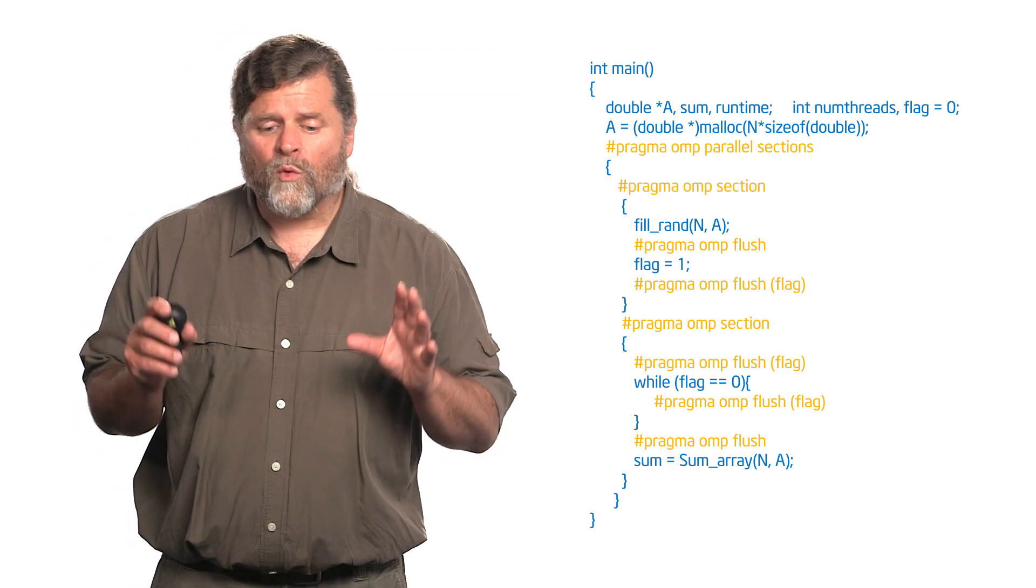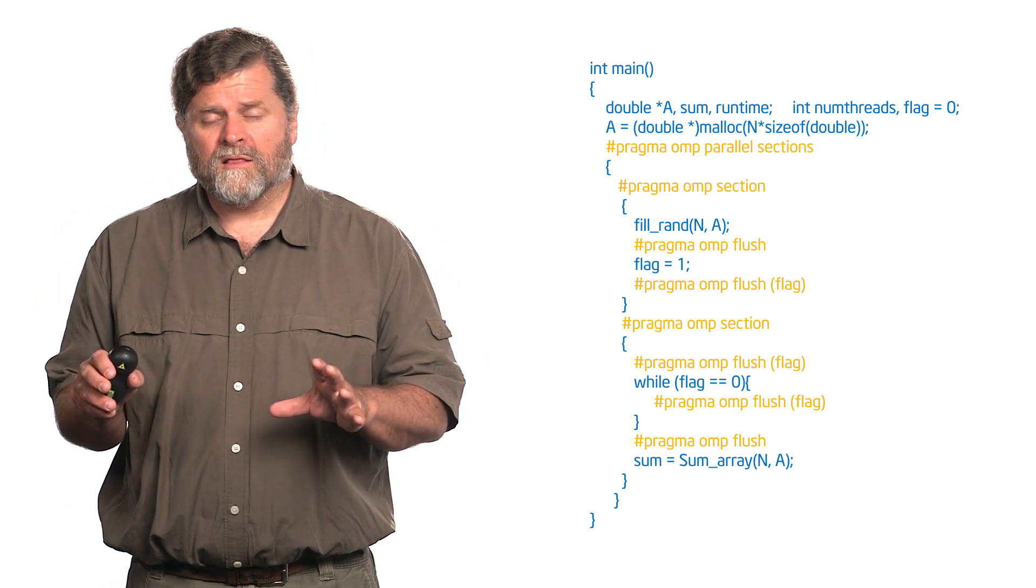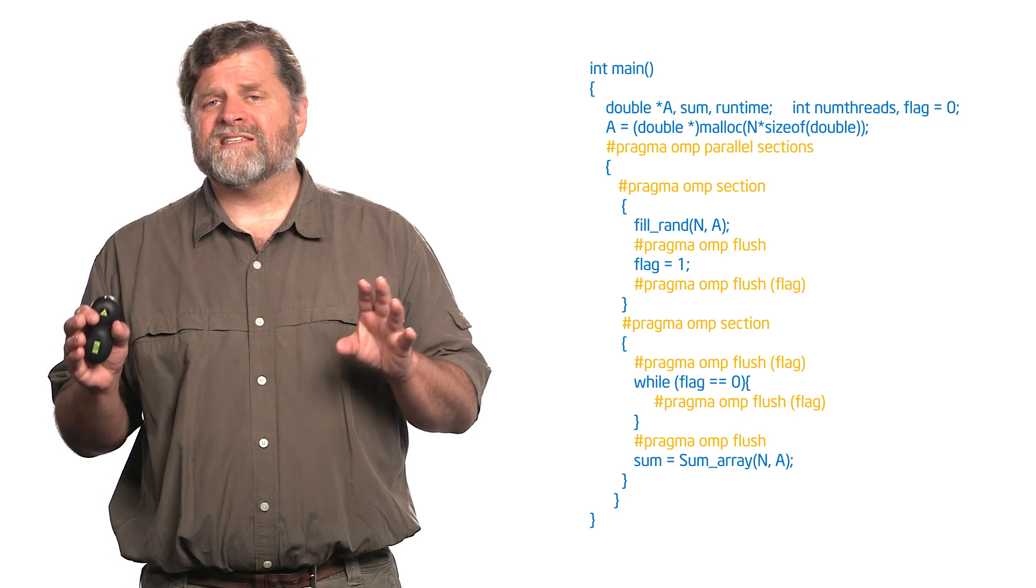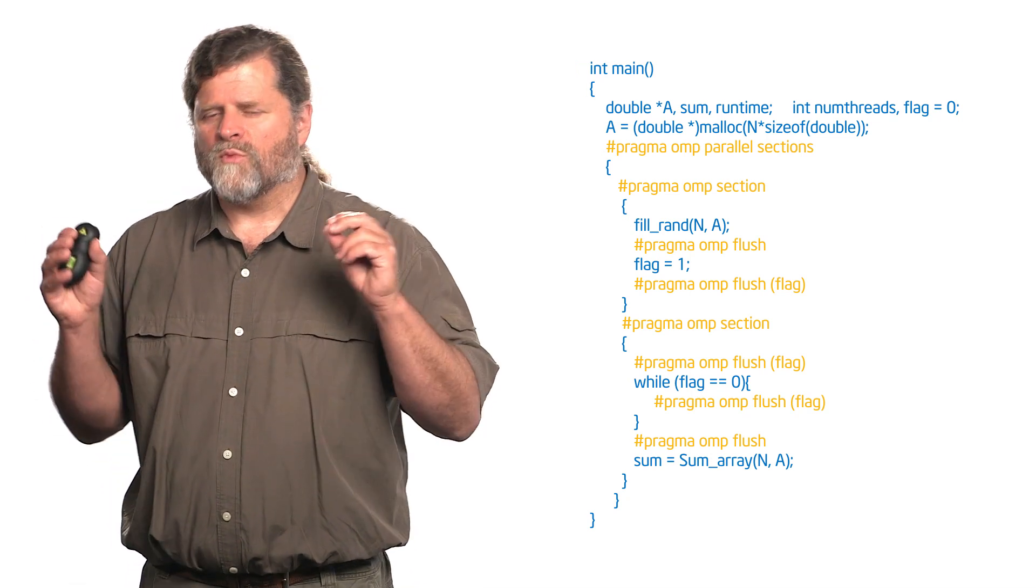So here's this code. Let's walk through it real carefully. We've got our array that we're going to fill, and now I have pragma parallel sections, and I'm going to have one section be the producer, one section be the consumer. Now if I was real picky here, and I didn't do this so the code would be small enough, I will put logic into this code to verify that I got two threads.